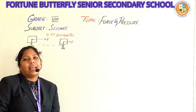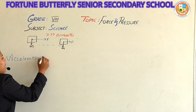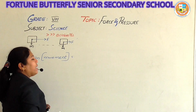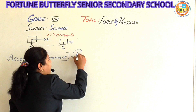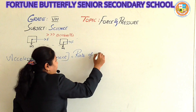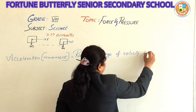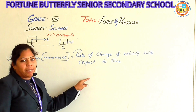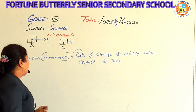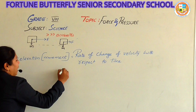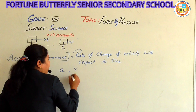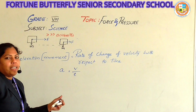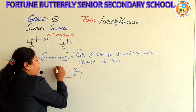What is meant by acceleration? Acceleration means movement. Another definition is: acceleration is the rate of change of velocity with respect to time. If I take acceleration as A, velocity as V, and time as T, then acceleration is given by the formula A = V / T.